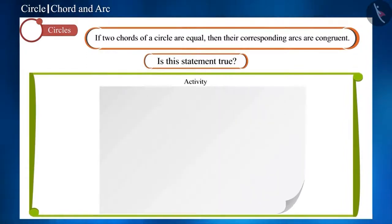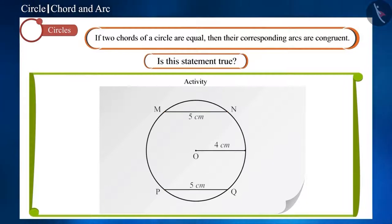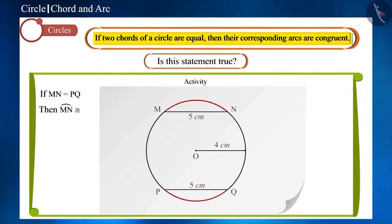On a paper, draw a circle of radius 4 cm with center as O. Now, we will draw two equal chords MN and PQ whose length is 5 cm. According to the statement, both these arcs MN and PQ will be congruent. Now let's see.